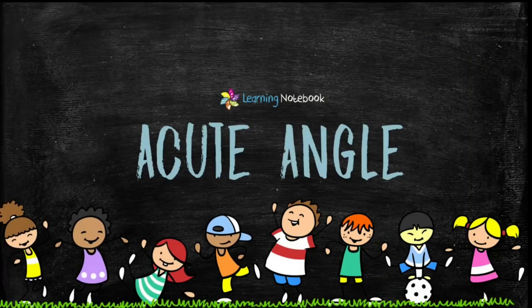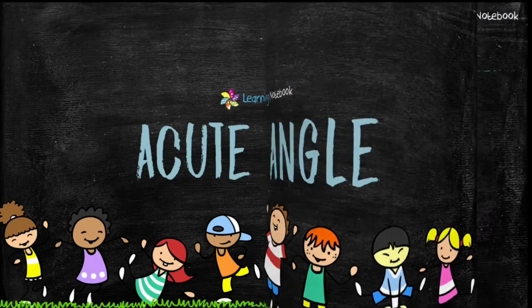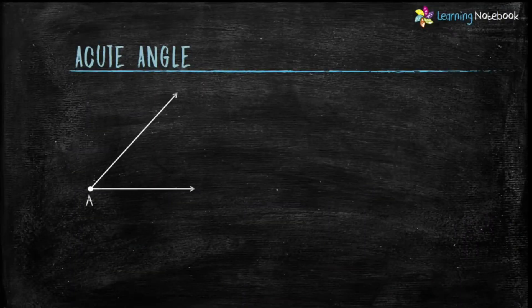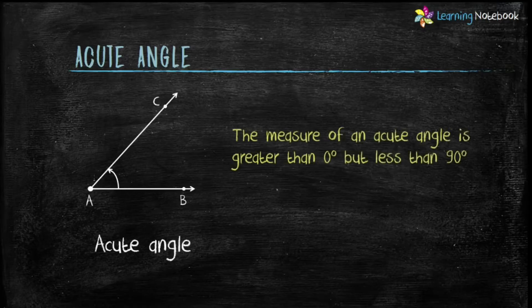Now let's start with types of angles. First is acute angle. The measure of an acute angle is greater than 0 degrees but less than 90 degrees. So students, in this figure, angle BAC is an acute angle.